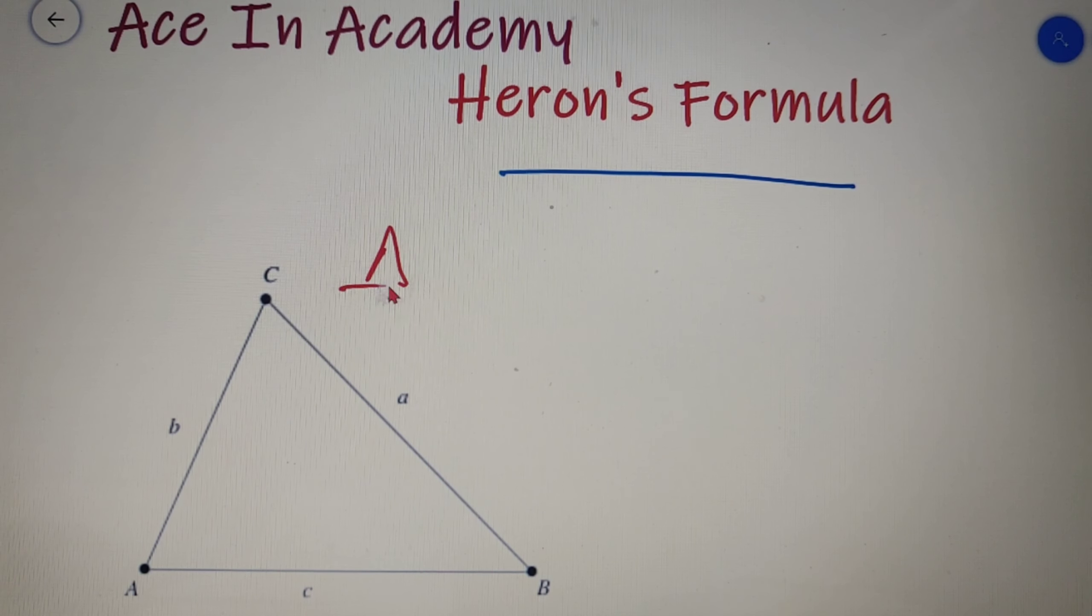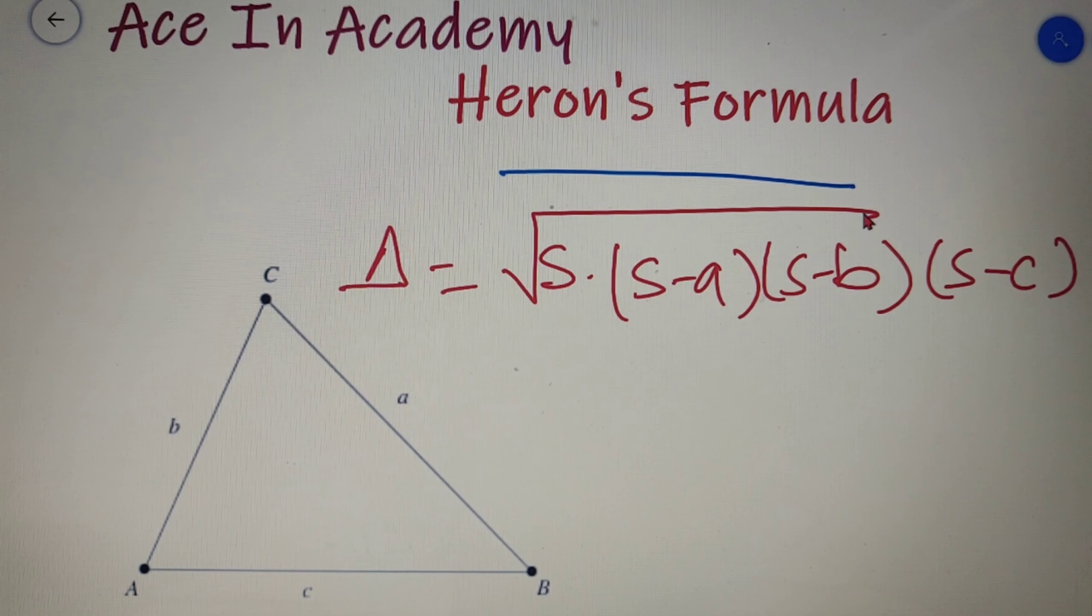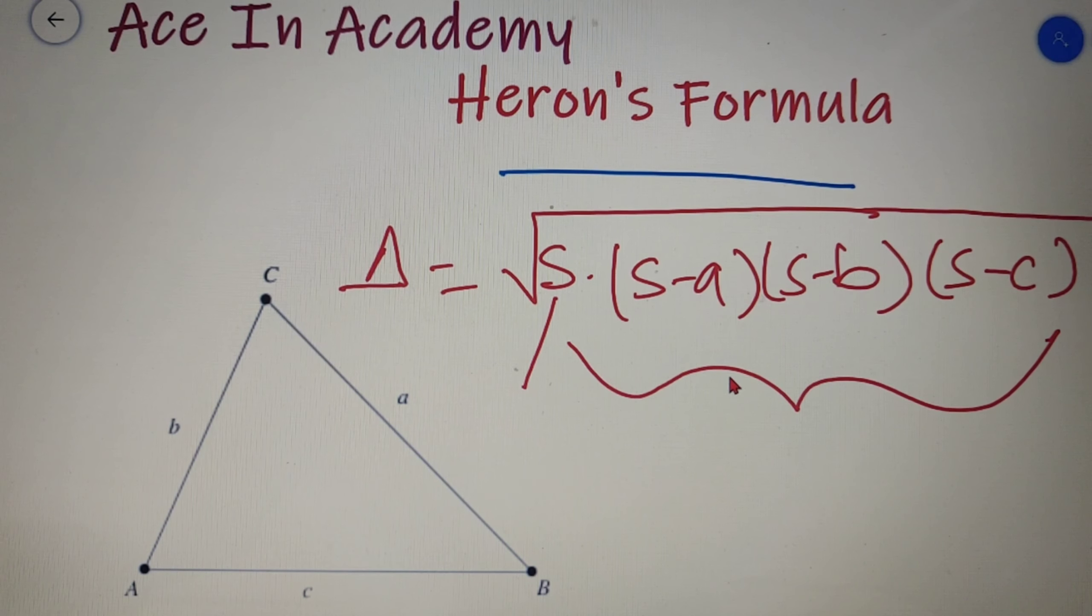The formula is equal to under root of s into s minus a into s minus b into s minus c. Remember that everything is under the square root, and here s is the semi-perimeter and a, b, and c are the sides of the triangle. By this formula you can easily calculate the area of any triangle given that you know all the sides.